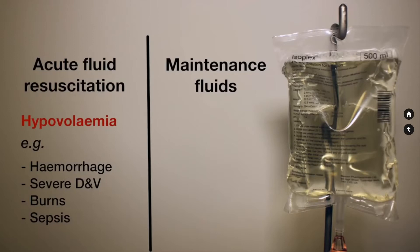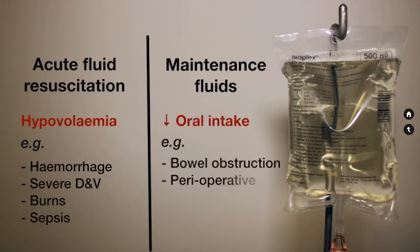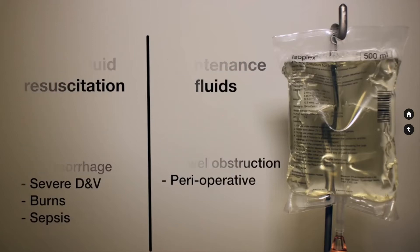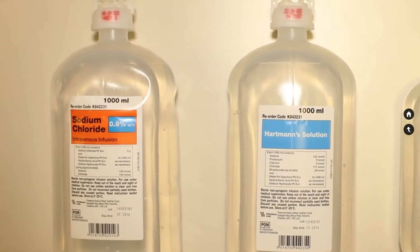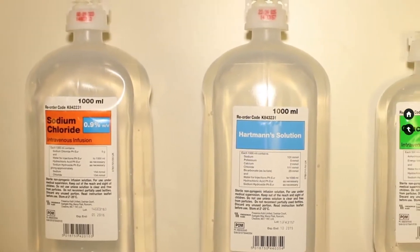More controlled maintenance fluid administration is typically required in patients unable to maintain adequate oral intake — for example, in cases of bowel obstruction or for surgical patients in the perioperative period. This maintenance therapy replaces ongoing fluid losses and maintains hydration. There are three main types of fluids you will encounter on the wards: crystalloids, colloids, and blood products.